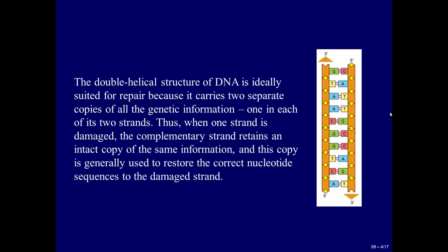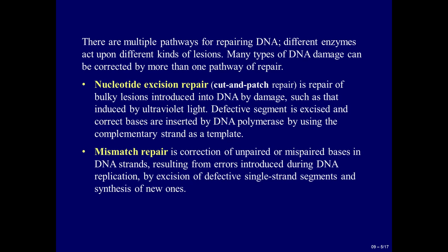The double helical structure of DNA is ideally suited for repair because it carries two separate copies of all the genetic information, one in each of its two strands. Thus, when one strand is damaged, the complementary strand retains an intact copy of the same information, and this copy is generally used to restore the correct nucleotide sequences to the damaged strand. There are multiple pathways for repairing DNA. Different enzymes act upon different kinds of lesions. Many types of DNA damage can be corrected by more than one pathway of repair.